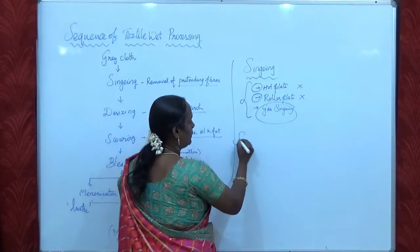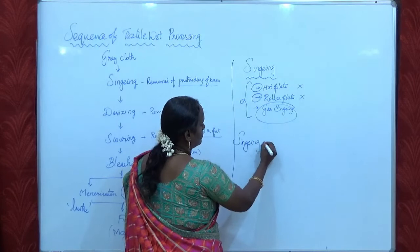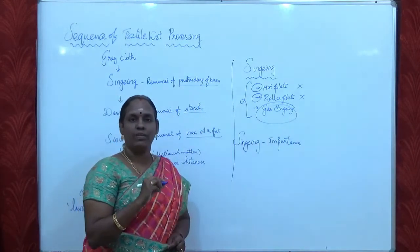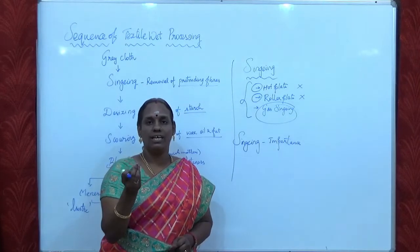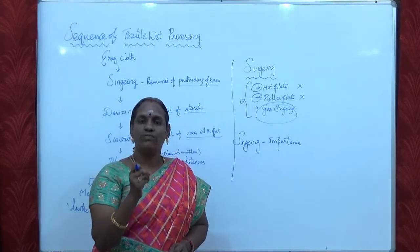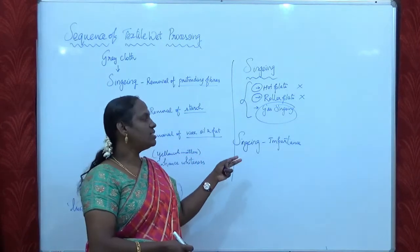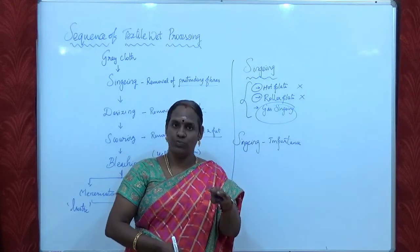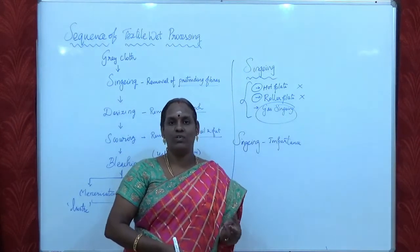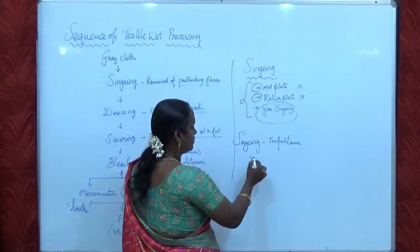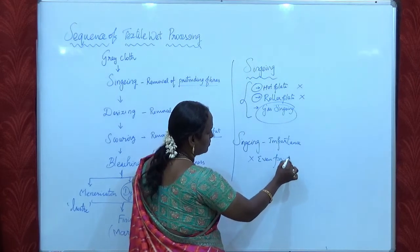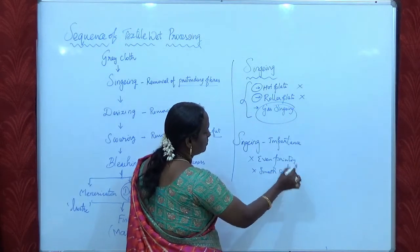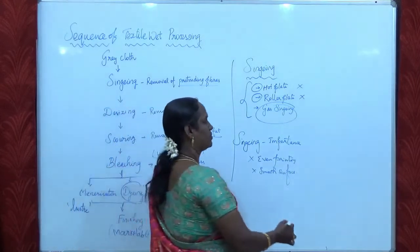Why is singeing important? The gray fabric contains lots of protruding fibers, and if unremoved these protruding fibers cause uneven printing. After singeing, the fabric surface is smooth and we can get clear-cut printing designs at the end of processing, achieving even printing and a smooth surface. This is the importance of singeing.